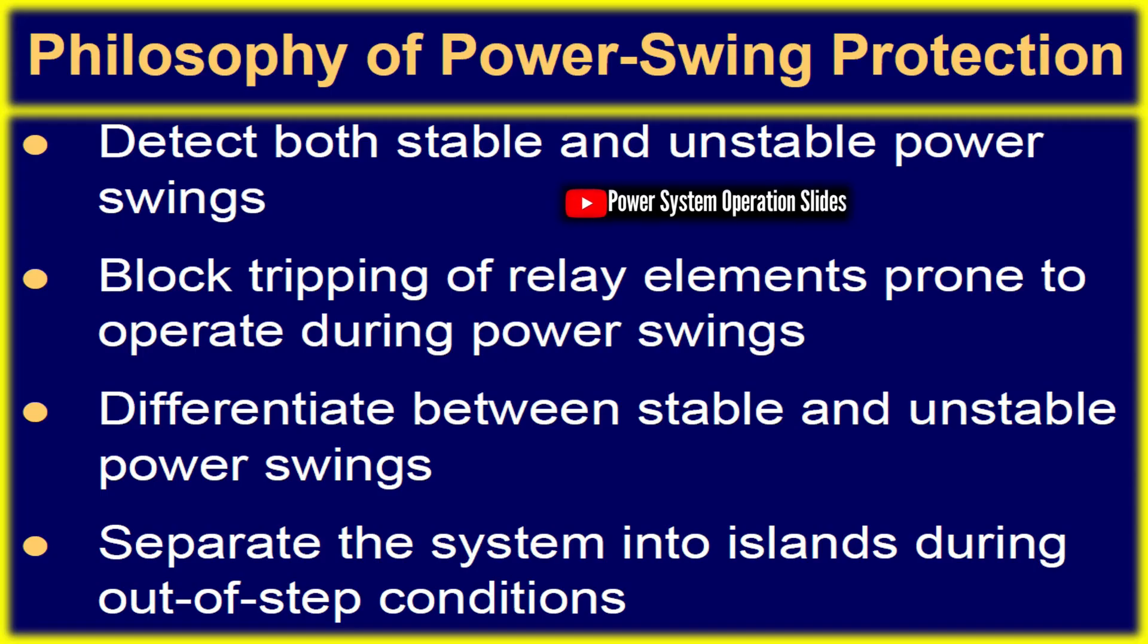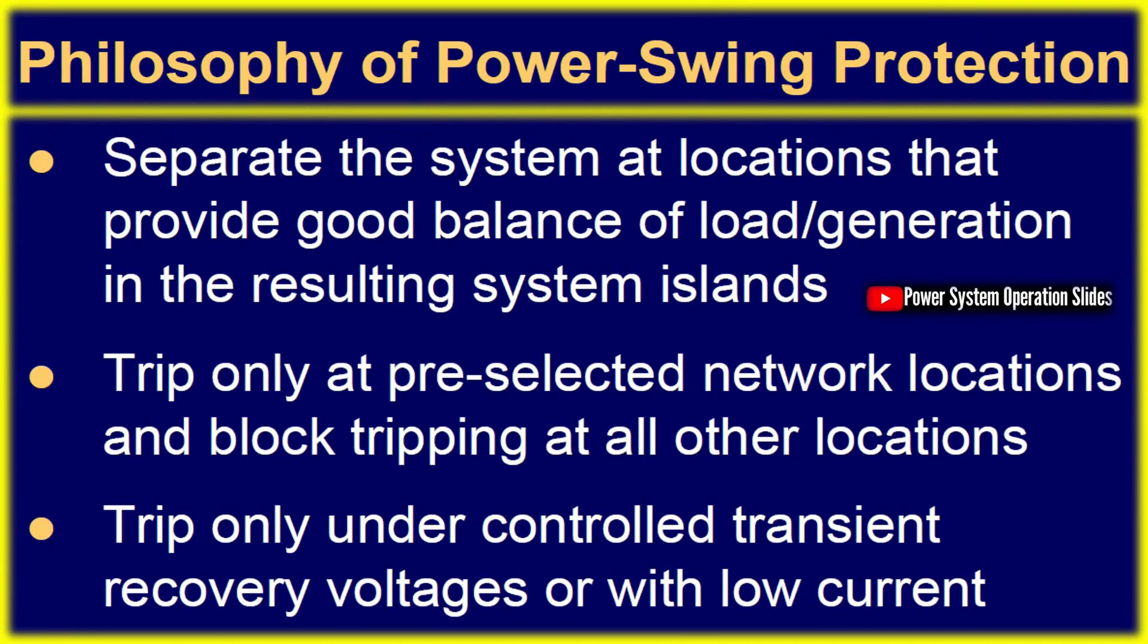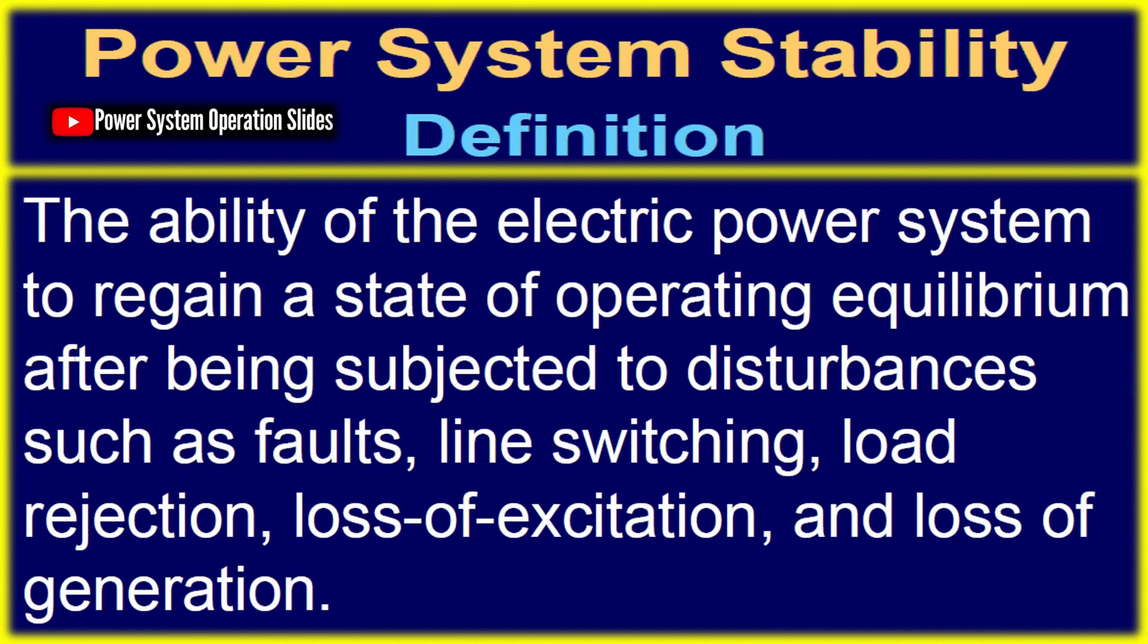Since designing a system to fully prevent such rare simultaneous failures is extremely costly, utilities employ special protection systems and remedial action schemes, such as under-frequency and under-voltage load shedding, along with controlled tripping of loads or generation, to minimize disturbance impacts.